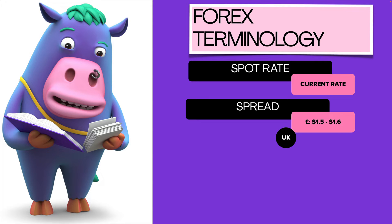If we were in the UK, this is how it's normally shown — the indirect method — where you've got one UK pound and the foreign exchange is shown around that one UK pound. We call that the indirect method; you'll hear me call it the normal method, because that's how it's normally shown. The home currency is one, and the foreign currency moves around it.